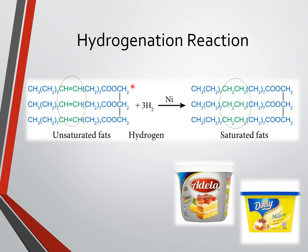Margarine is made by hydrogenating some of the carbon-carbon double bonds in polyunsaturated vegetable oils such as sunflower oil. In the hydrogenation reaction, there are three double bonds between carbon atoms in the unsaturated fat molecule. For each double bond, two hydrogen atoms are needed — one for each carbon — so three double bonds require six hydrogen atoms in total. When the hydrogen atoms enter the double bonds, the double bonds no longer exist and the unsaturated fats become saturated fats. Nickel serves as the catalyst.